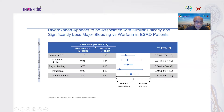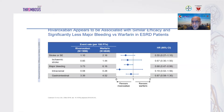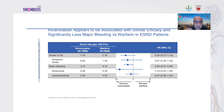Recent data shows rivaroxaban appears associated with similar efficacy and significantly less major bleeding versus warfarin even in end-stage renal disease, though still off-label. European guidelines remain conservative for end-stage renal disease; American guidelines may evolve. The evidence suggests NOACs, particularly rivaroxaban, may be associated with lower risk of adverse renal outcomes than warfarin in AF patients — and this guidance is likely to change.